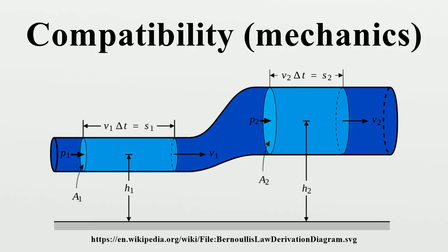We can write these conditions in index notation using the permutation symbol, and in direct tensor notation where the curl operator can be expressed in an orthonormal coordinate system. The second-order tensor is known as the incompatibility tensor, and is equivalent to the Saint-Venant compatibility tensor.